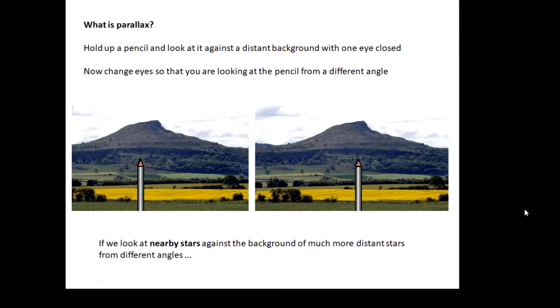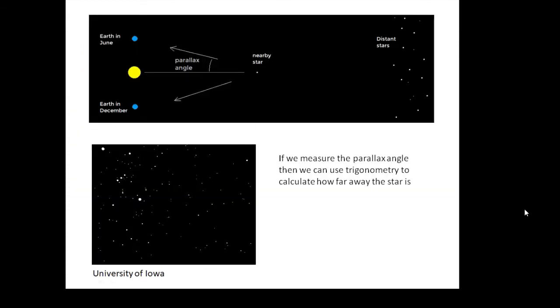But how do we look at stars from a different angle? Well, what we do is we look at them at different times in the year. If you look, here's the Earth in June and then there's the Earth in December. And if you observe a star, a nearby star, in June and December, then it will appear to move against a background of more distant stars.